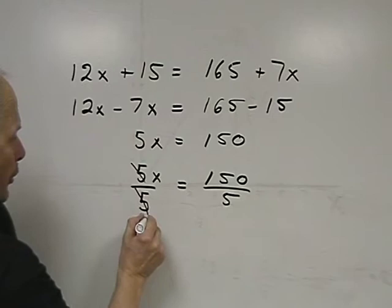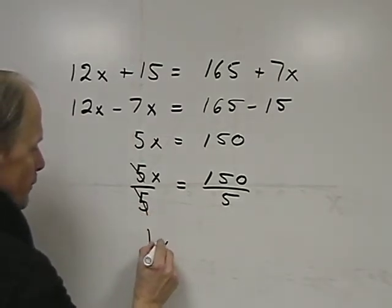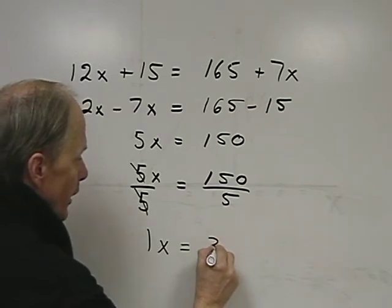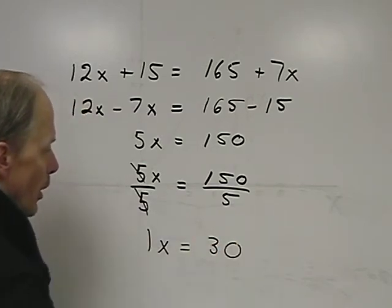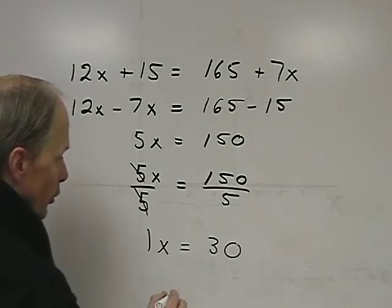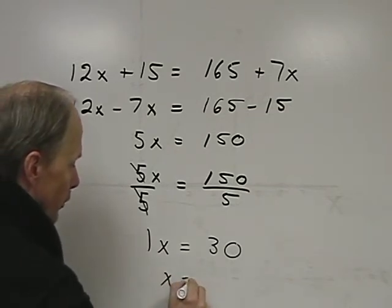So this will reduce to 1x, and 5 goes into 150, giving us 30. So 1x is equal to 30, or x is equal to 30.